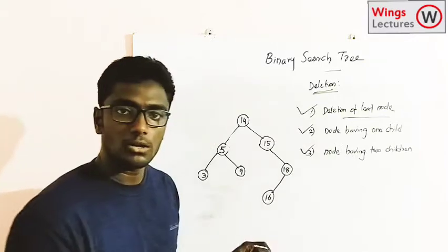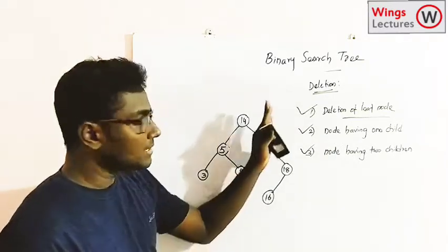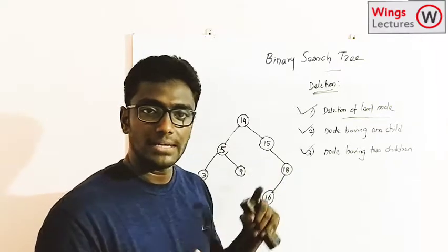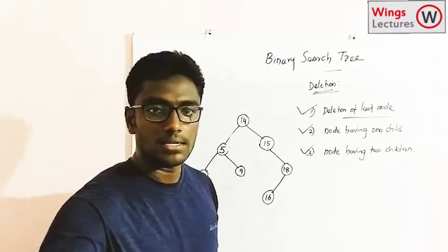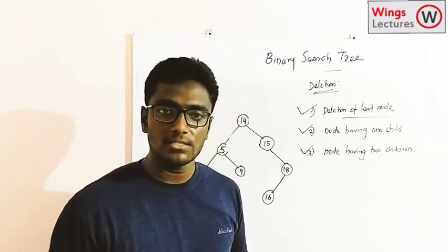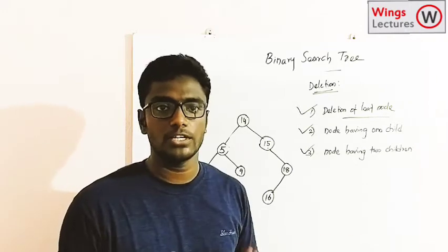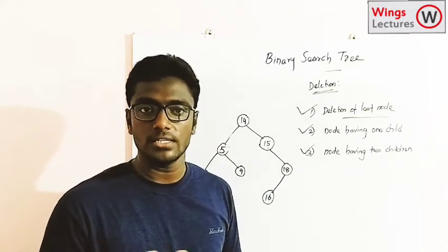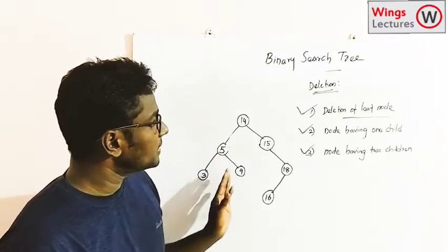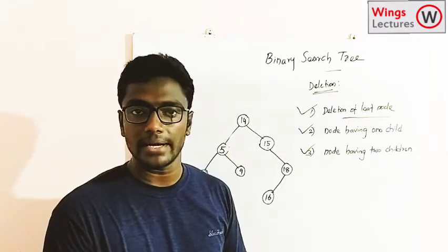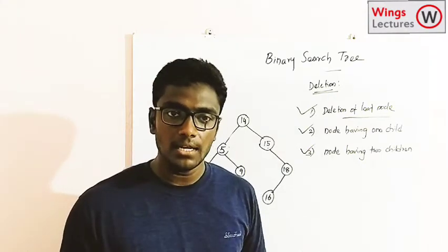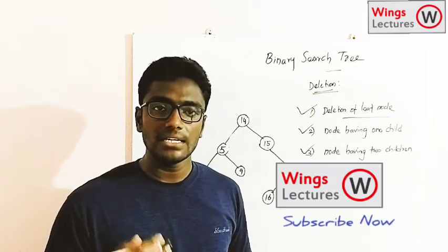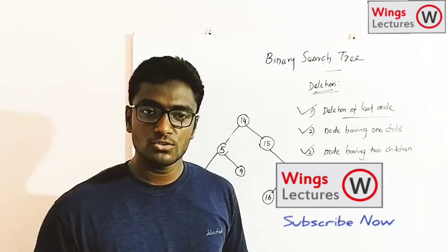So this is how we perform deletion operations in a binary search tree. The logics are simple but you have to keep an eye on all of them carefully. That covers what is a binary search tree, how it differs from a binary tree, and how to perform insertion and deletion. If you have any doubts, comment in the comment section. In the next class we are going to see about AVL tree — that's going to be a very interesting one. Thank you so much.